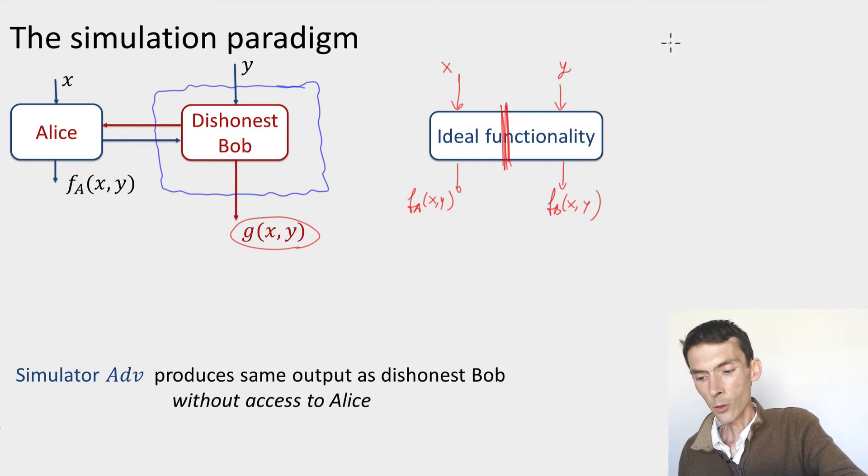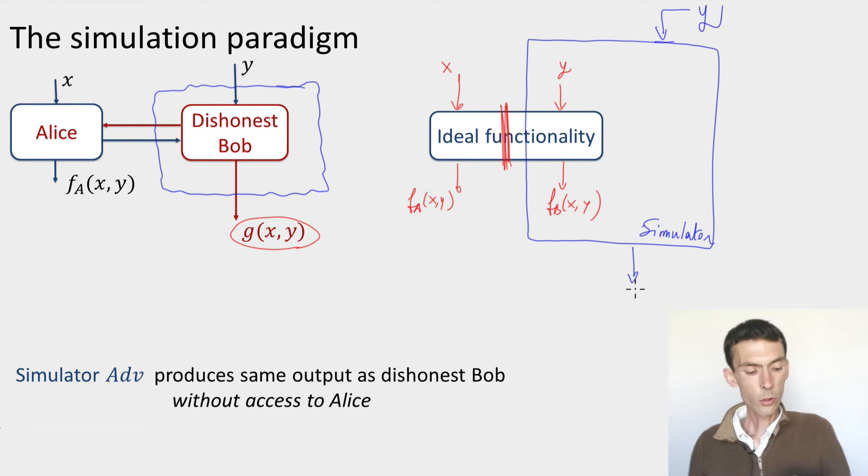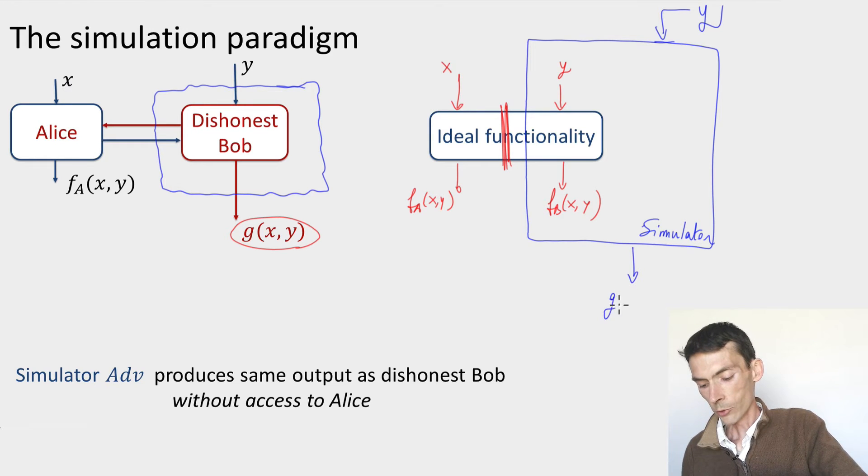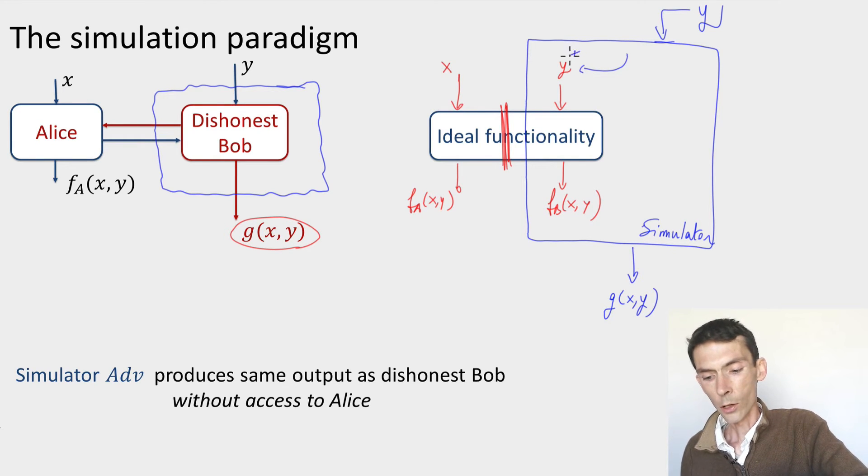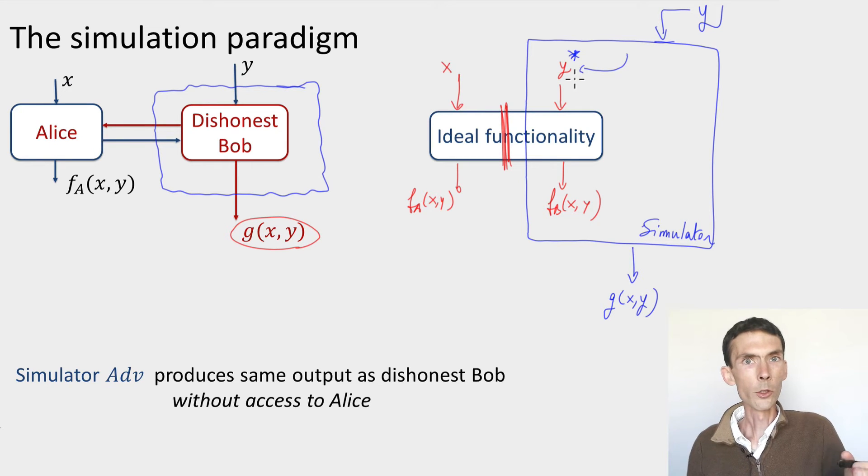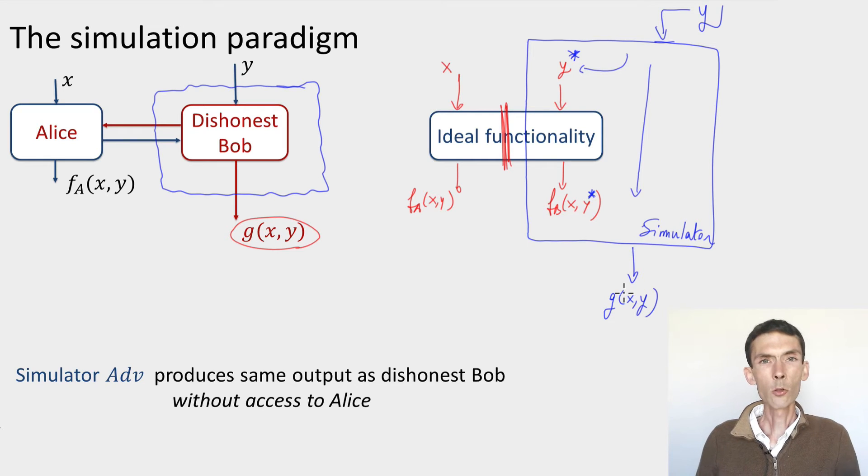The simulator is something that completely takes over Bob's part of the ideal functionality. So this is the simulator. It receives Bob's output Y, and is to produce the same output as the dishonest Bob. So some G of X, Y. And in order to do this, the only thing the simulator can do is interact with the ideal functionality. Meaning it can choose to input Y, or maybe it can choose to input some other Y, let's call it Y star. It can choose Y star depending on Y, whatever information it has. The ideal functionality, by definition, will output FB of X, Y star. And then based on FB of X, Y star, the simulator can do some computation, but it has to output something that looks exactly like the output of the dishonest Bob.